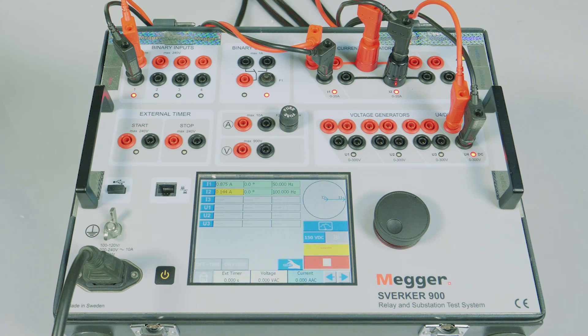we can observe that the CT2 current has gradually increased and the relay dropped out when the CT2 current was 0.144A. The CT1 current is fixed at 0.875A.